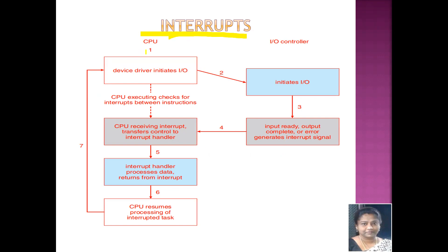Step one: the device driver initiates IO. There is a need for doing an IO operation. The control is with the CPU, and the CPU keeps checking for interrupts between instructions — every time the CPU is going to execute processes, it will keep checking whether any interrupt is being generated. Once the interrupt is generated, it reaches the CPU, and the controller will transfer control to the interrupt handler.